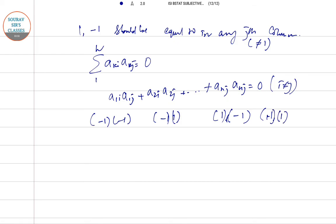So let there be r number of minus 1 into minus 1 terms. So there will be m minus r number of minus 1 into 1 terms.